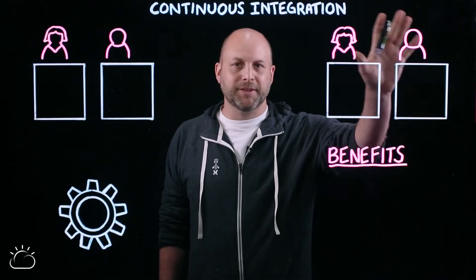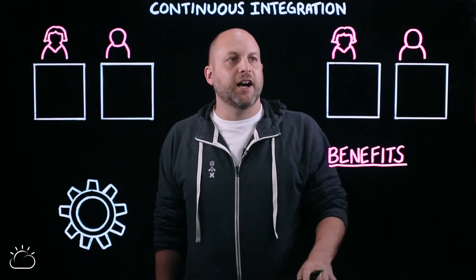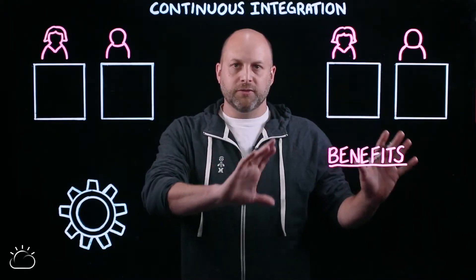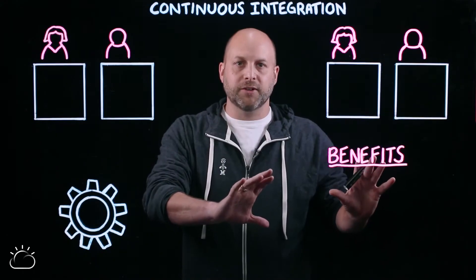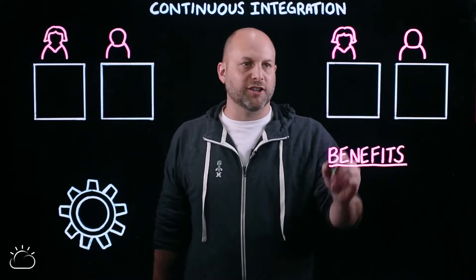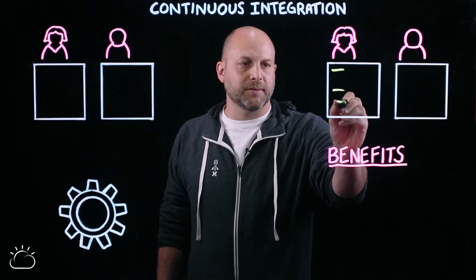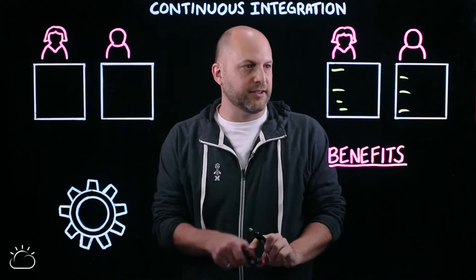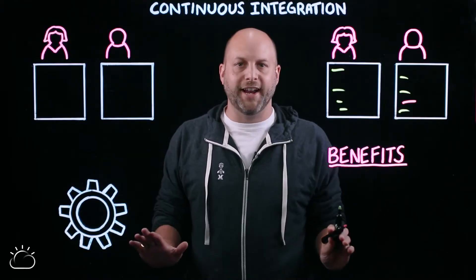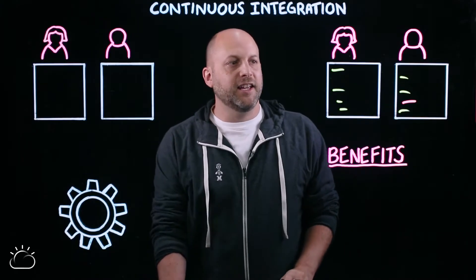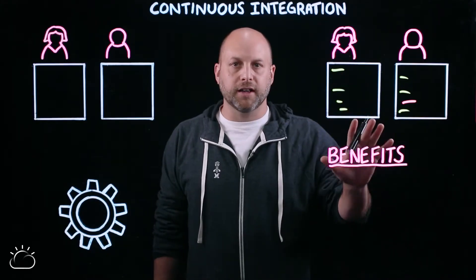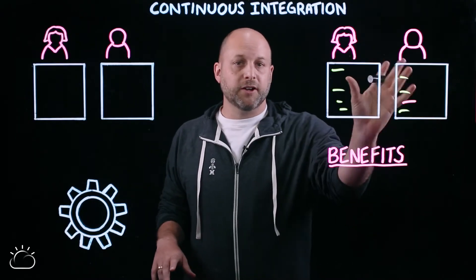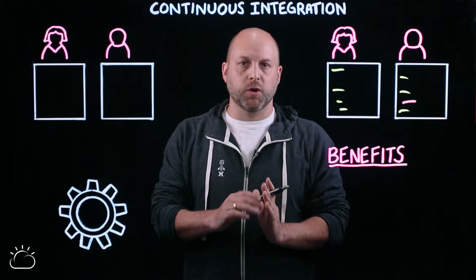We've got a couple of developers — they're probably on a team of 30 or 50. We've got Alice and Bob, and they're working on their own features. They're going to keep separate on their own features for a long time. They're writing some bits of new code, maybe deleting a line of code here or there. Their plan is that they're going to get their features to work against the code base, and then a couple of weeks or months later, they're going to integrate and merge their work together.